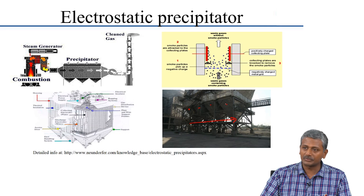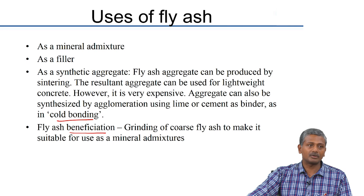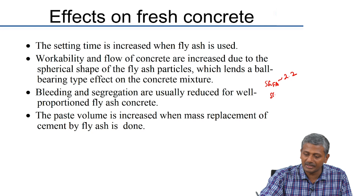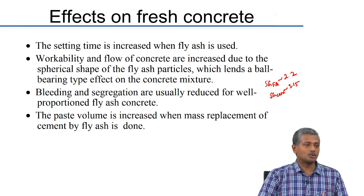Bleeding and segregation are usually reduced for well-proportioned fly ash concrete. Fly ash has a lower specific gravity — about 2.2 versus 3.15 for cement — so replacing cement with fly ash increases the overall volume of paste, meaning more fines in the system, which results in improved resistance to bleeding and segregation.